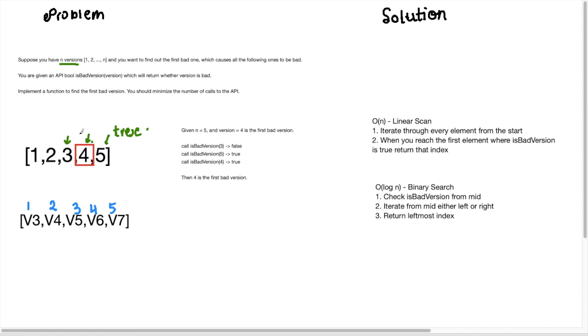So if I called is bad version with four it should return true. So what we can observe here is that from our starting point we need to find the first bad version from this side here from the left. Okay now I'll go ahead and discuss a few ways to solve this problem.